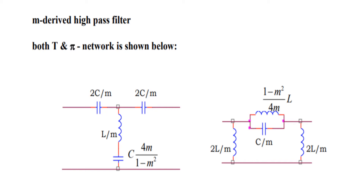Next is the M-derived high pass filter. Both T and pi networks are shown below. In the T section series arm, two capacitances are in series, both equal: 2C/M and 2C/M. In the shunt arm, inductance L/M is in series with capacitor C × 4M / (1 - M²).